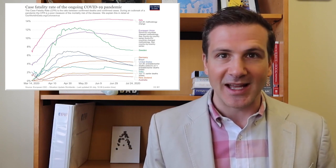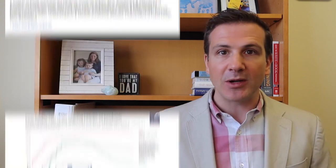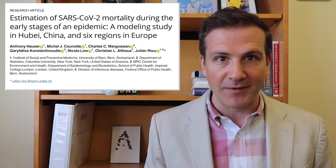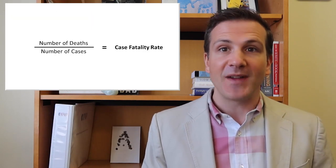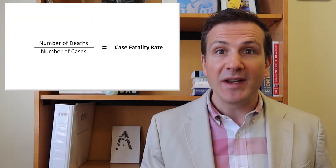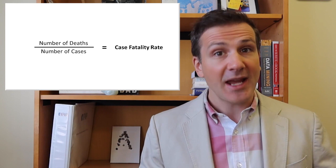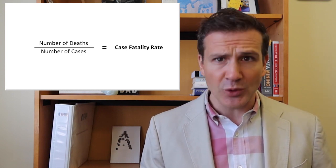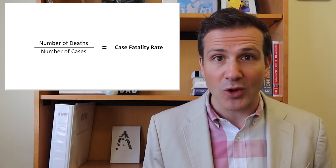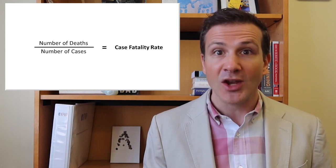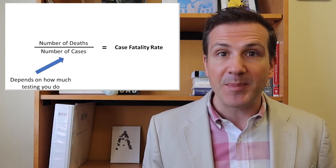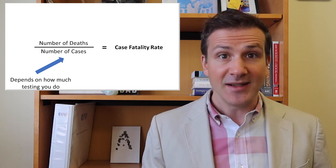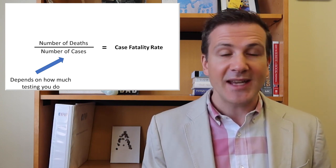But there are two big problems with the case fatality rate metric, problems this paper appearing in PLOS Medicine attempts to solve. The first problem gets talked about a lot. The case fatality rate is defined as the number of deaths from COVID-19 divided by the number of cases of COVID-19. If you assume we aren't capturing all the cases of COVID-19, and at this point the evidence is overwhelming that we're missing a large proportion of cases, then the case fatality rate becomes really dependent on the denominator, how many people you can test.